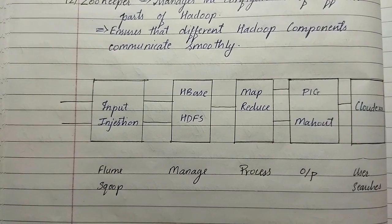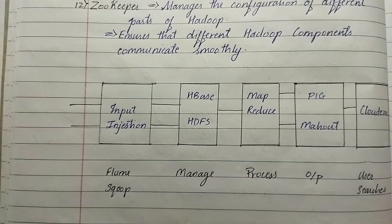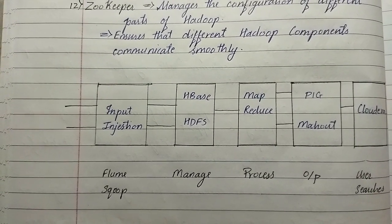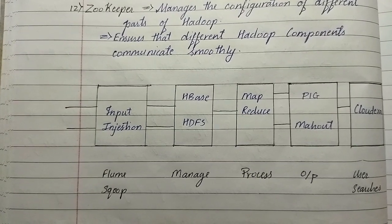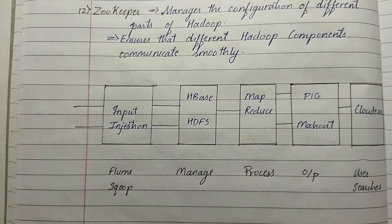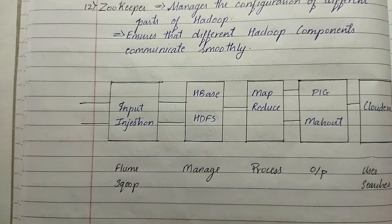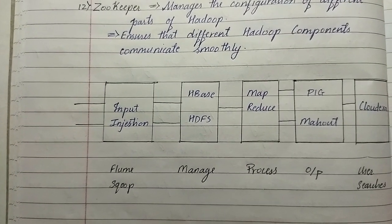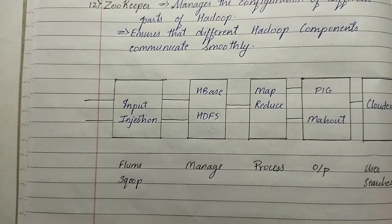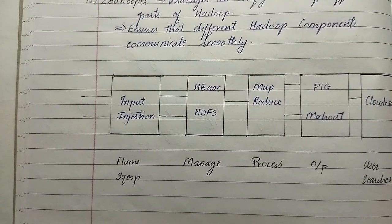This diagram basically represents how the big data tools help in performing particular tasks. For collecting data we use Flume and Sqoop. For managing, HDFS and HBase work. While processing the data, MapReduce works. For generating output, Pig and Mahout will help us get the output. For Cloudera, it works as a search engine where the user searches something and it gives the output to the user.